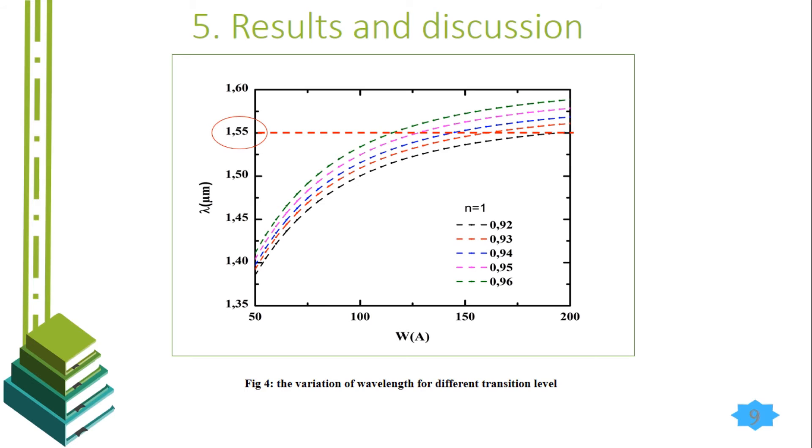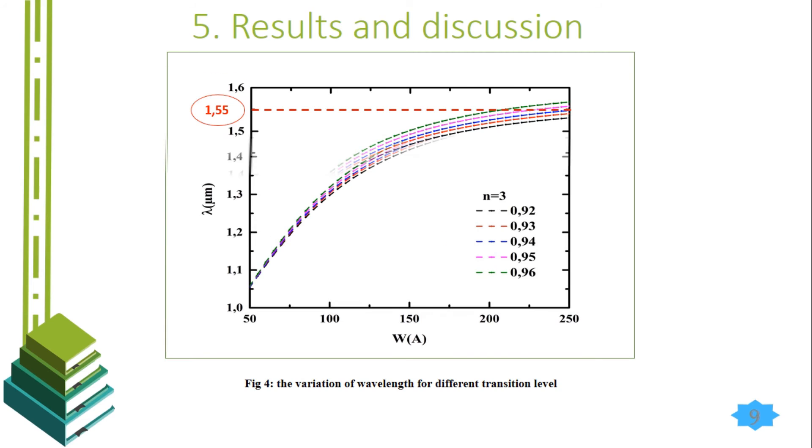In this result, for the first transition, we use the heavy holes effective mass. And for the second and third transition, we use the light holes effective mass for the barrier and the well in each equation. It's due to the orthogonality of the solution of Schrödinger equation.